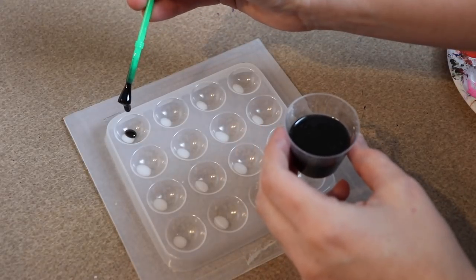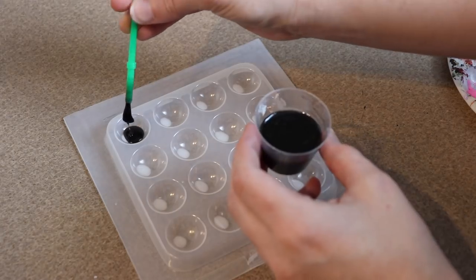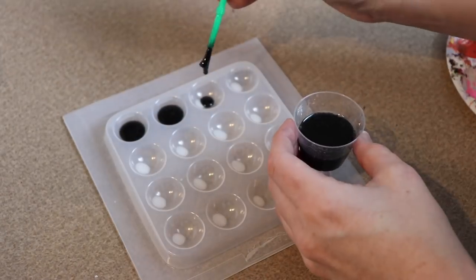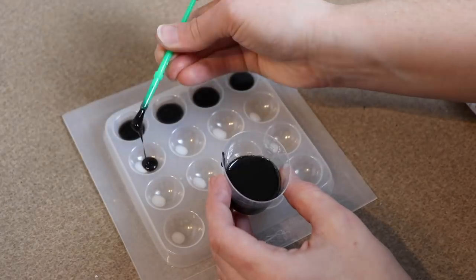Like last time, you want to take your time pouring the resin so that you can get a perfect circle. When you're doing this, this affects the size of the pupil so you can pour less or more depending on what you want the eye to look like.